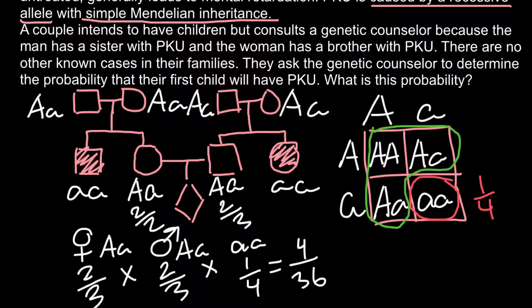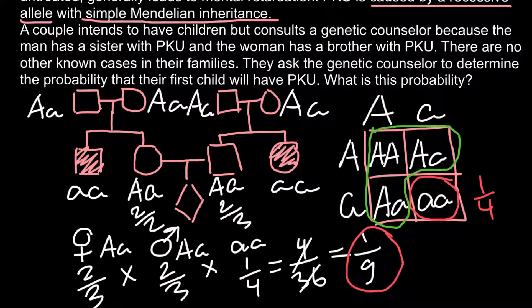We can divide both numerator and denominator by 4, and our answer is 1/9. So the probability for this couple to have an affected child is 1/9. That's all for today — thank you for your attention. Please subscribe for my new videos, give a thumbs up if you liked this video, write your comments and questions, share this video with your classmates, and see you in the next video. Goodbye!